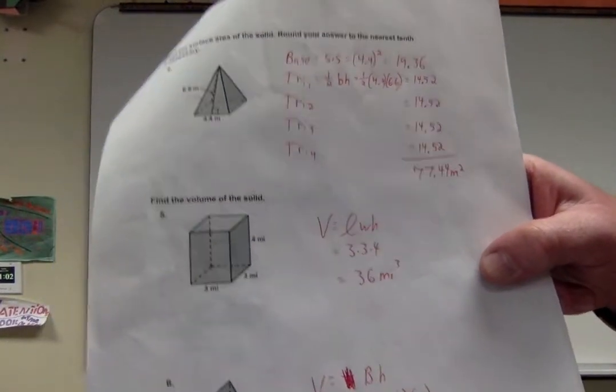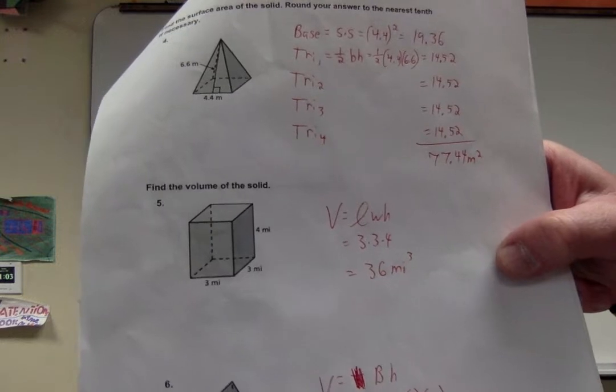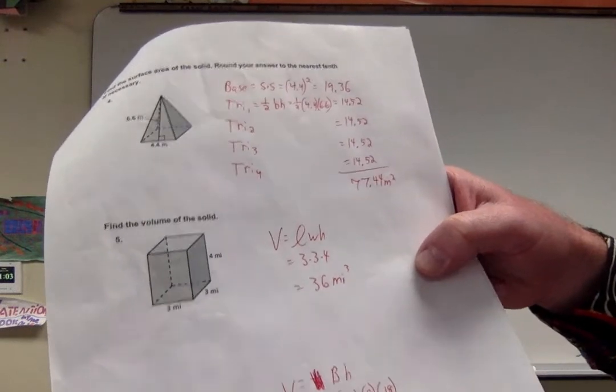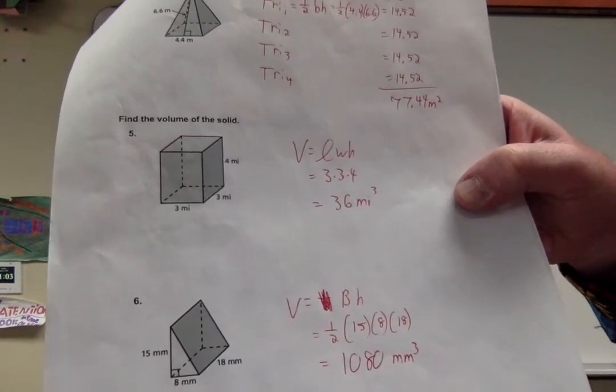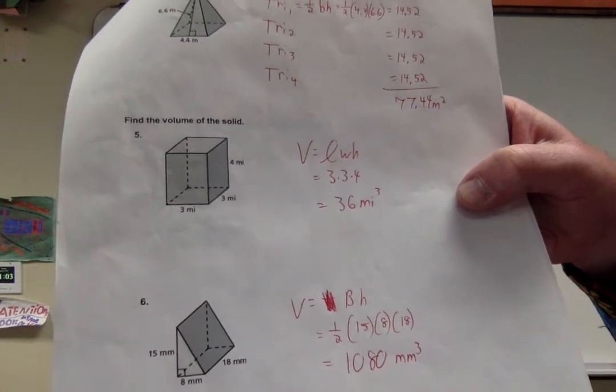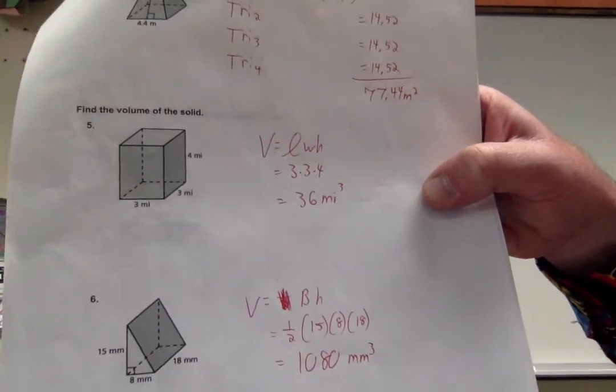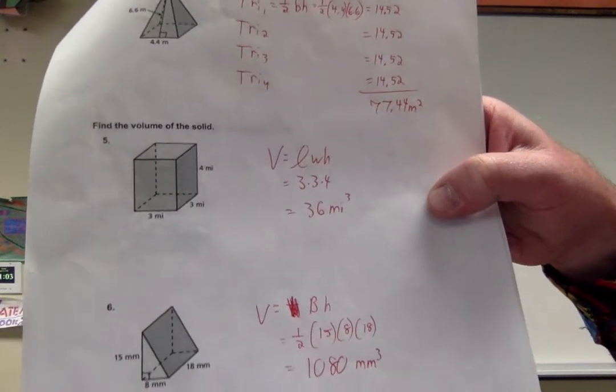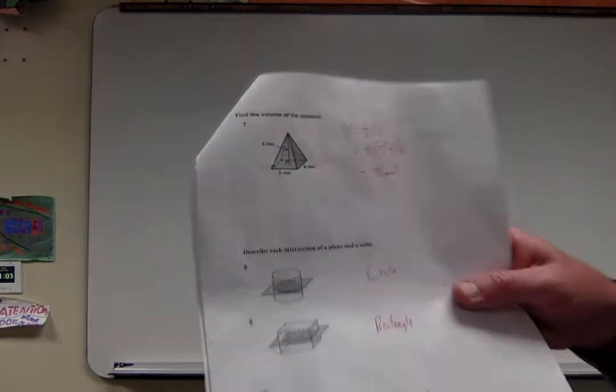Number 5, find the volume. Well, the volume of a rectangular prism is the length times the width times the height. Multiply those three numbers. 36 miles cubed. Number 6, I have to find the volume of a triangular prism. Find the area of the base. We're going to talk about that today, but that's what capital B means. Capital B is the area of the base. Well, that was a triangle. So that's one half the base times the height. One half the 15 times the 8 times the height of that prism, which was 18. I got 1,080 millimeters cubed. Cubed, cubed, because it's volume. How many cubes can fit inside there?